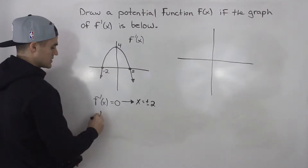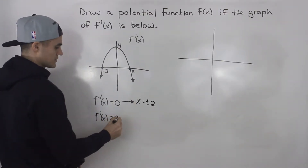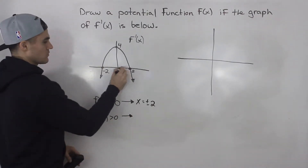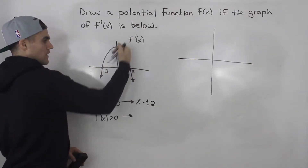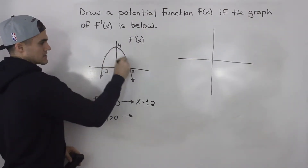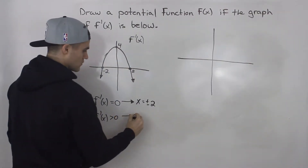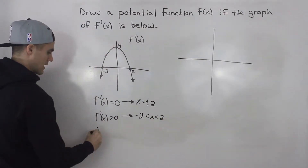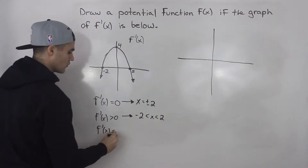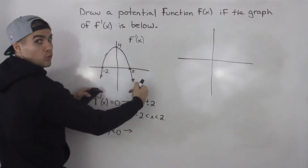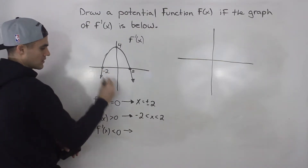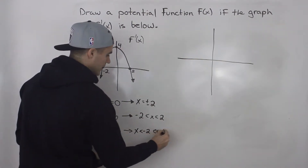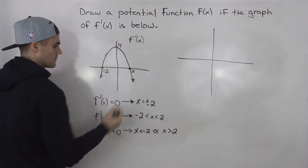Then I look at when the derivative is going to be greater than zero. That's going to happen in between x values negative two and positive two — the derivative is greater than zero, above the x-axis in this interval. And when is the derivative negative, less than zero? That's going to happen when x is less than negative two, or when x is greater than positive two.